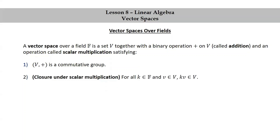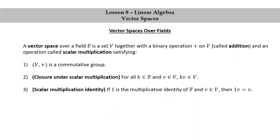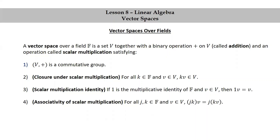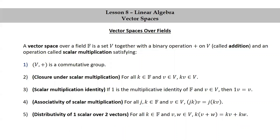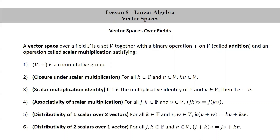The second property is closure under scalar multiplication: for all k in F and v in V, k times v is in V. When we take an element k in the field F, we call k a scalar. Third, scalar multiplication identity: if one is the multiplicative identity of F and v is in V, then one times v equals v. Fourth, associativity of scalar multiplication: for all j, k in F and v in V, (jk) times v equals j times (kv). Fifth, distributivity of one scalar over two vectors: for all k in F and v, w in V, k times (v plus w) equals kv plus kw. And finally, distributivity of two scalars over one vector: for all j, k in F and v in V, (j plus k) times v equals jv plus kv.